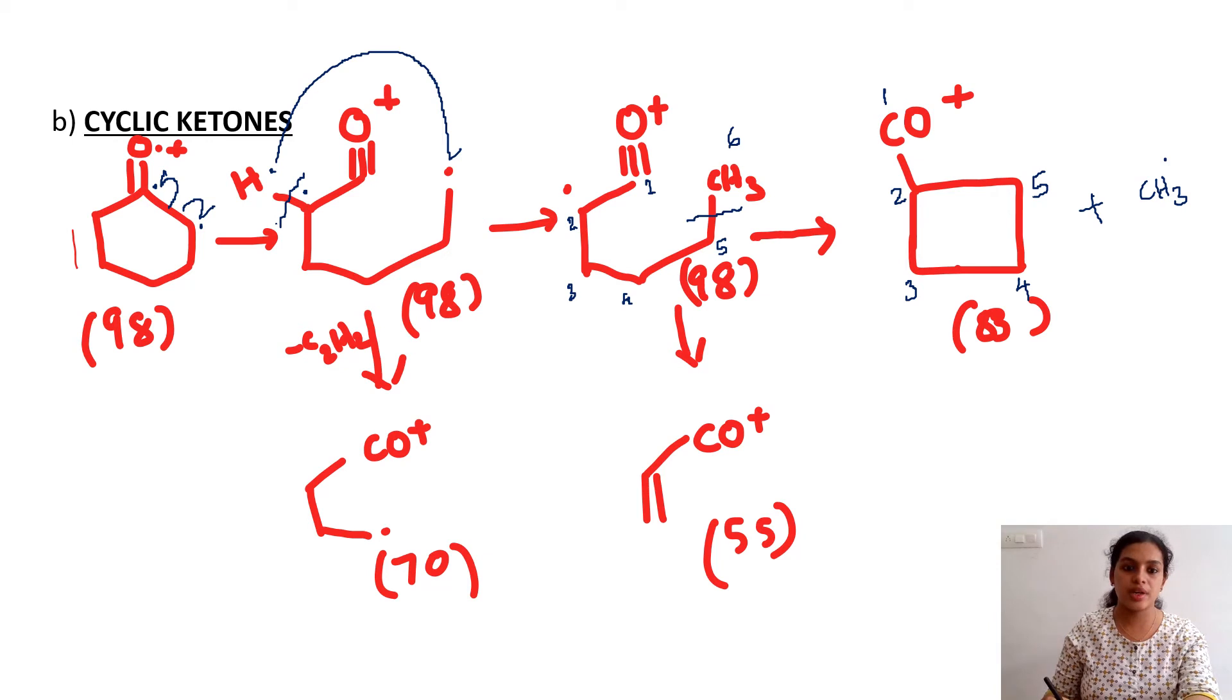From here, suppose this doesn't take place, and another possibility is to eliminate an ethylene molecule like this. This was CH2 and this is also CH2, so CH2 double bond CH2, there will be a double bond. So this CH2=CH2 is expelled. It is not C2H2, sorry for the mistake. And now you will get a fragment like this; the m/z value is at 70.